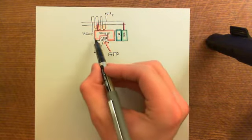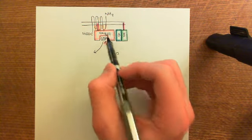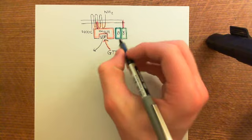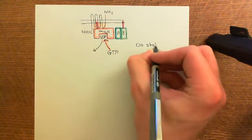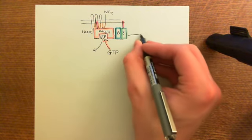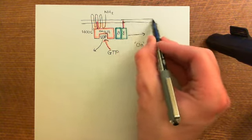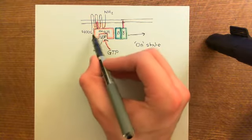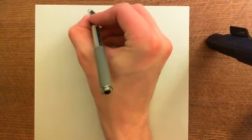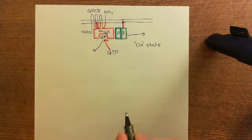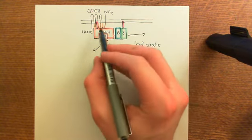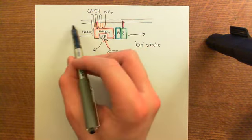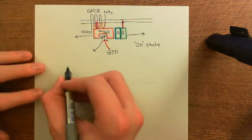When GTP binds to the alpha subunit of the heterotrimeric G-protein, the alpha subunit changes in conformation and cleaves away from the beta-gamma complex — because once the alpha subunit has GTP bound, once it's in the on state, it no longer binds to the beta-gamma complex. It releases the beta-gamma complex, which remains attached to the inner leaflet of the phospholipid bilayer. Without the beta-gamma complex, the alpha subunit also cleaves away from the G-protein coupled receptor, and it goes off on its own, still attached to the inner leaflet, but now independent.